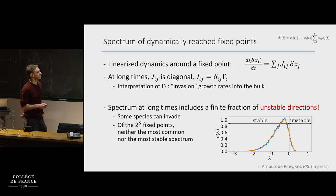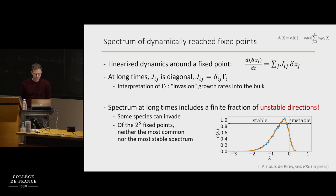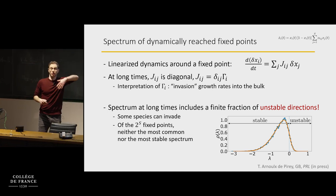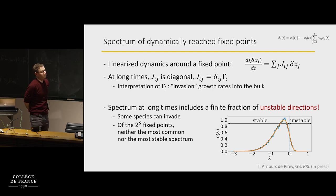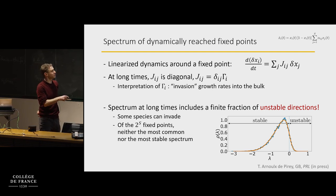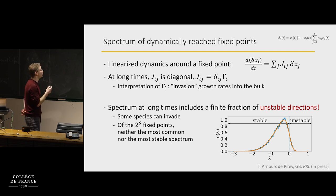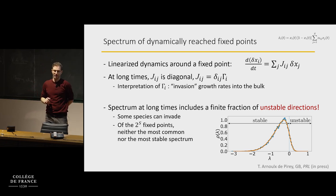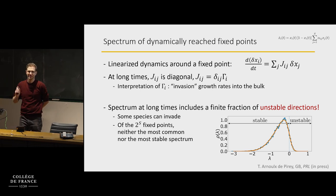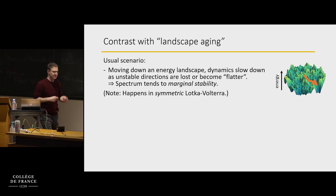There's a finite fraction of unstable directions and it's not marginal — it's truly unstable. Another point is that if you just randomly take a zero or one for each variable and ask what kind of spectrum you'd get, it wouldn't look like this — it would be centered around zero. So you're not choosing the most common fixed points, nor the most stable ones. The dynamics is choosing something specific.